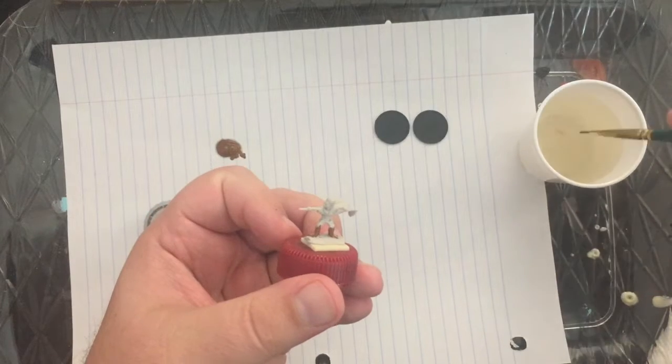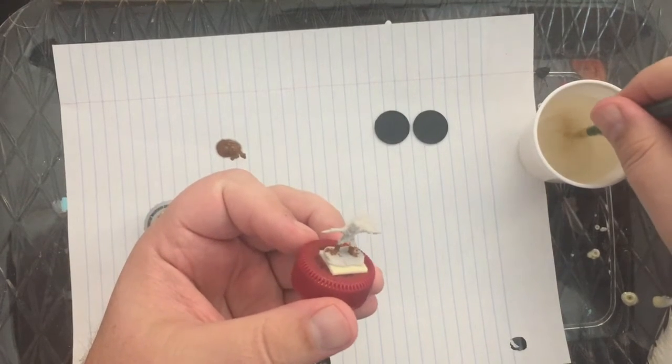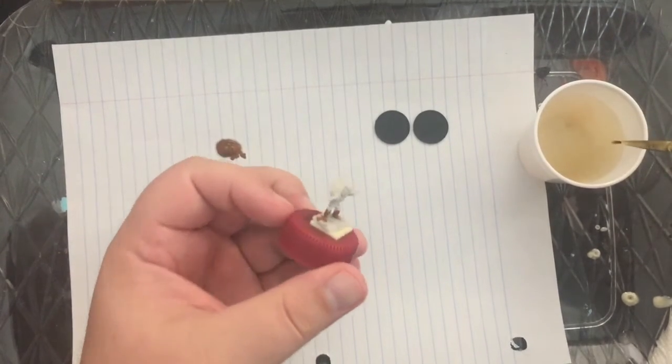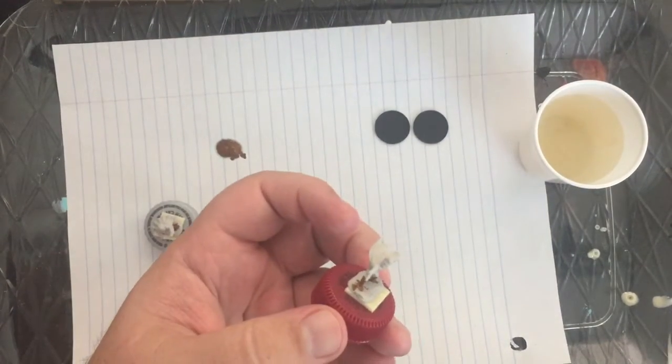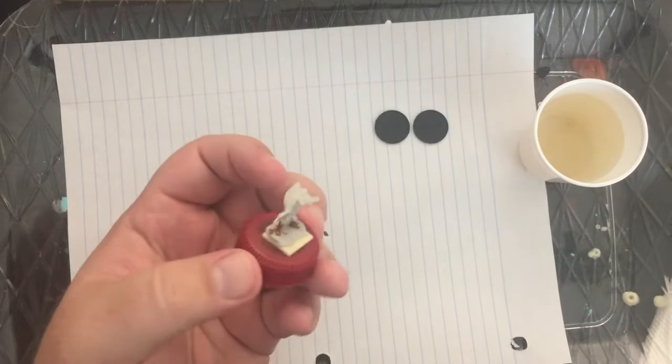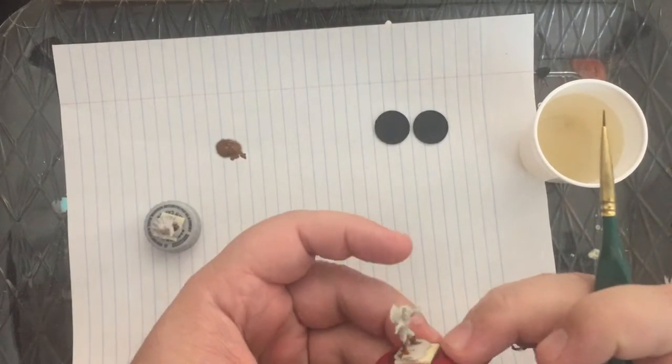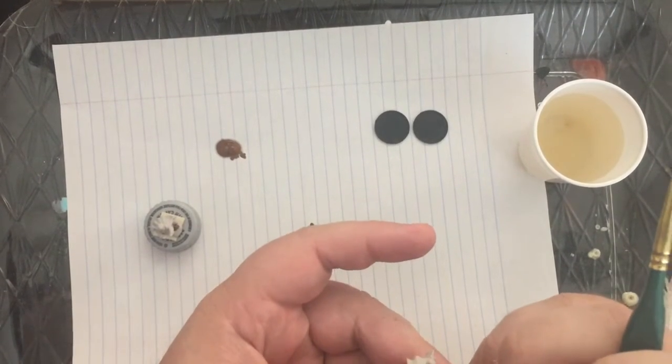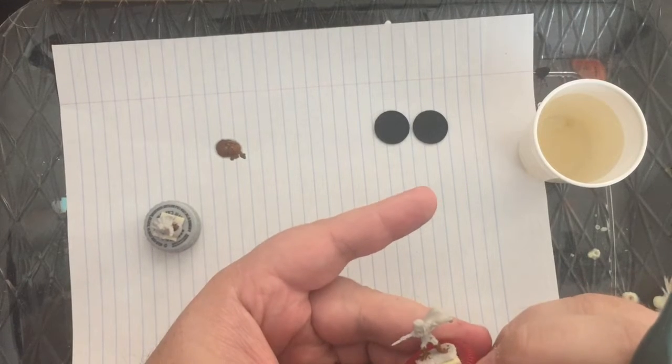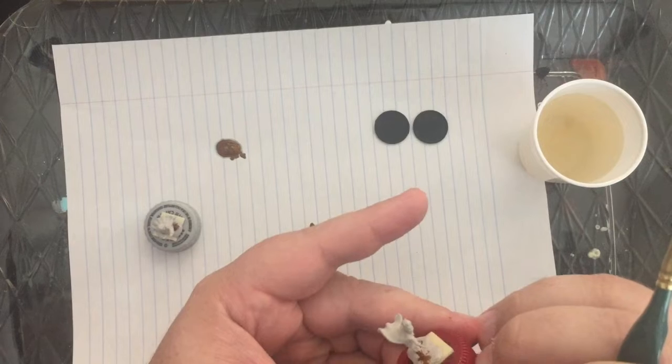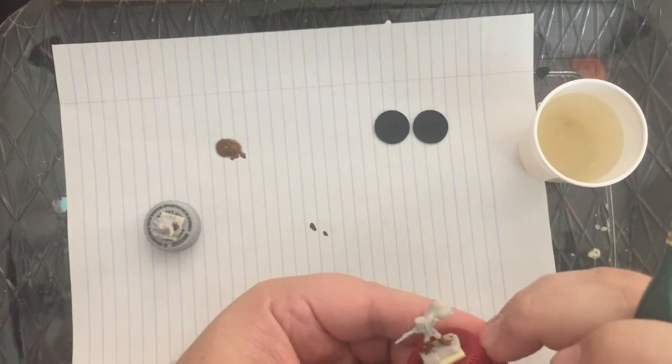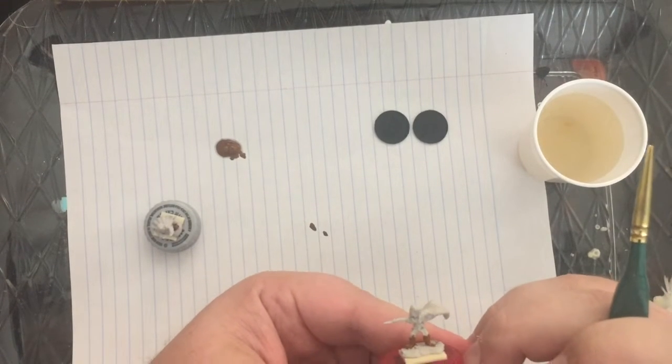The tricky part on these guys is the skin color. That's always the tricky part on all miniatures, along with the eyes. I don't even know if I can get eyes - I might have to just wash in some eyes with this size.